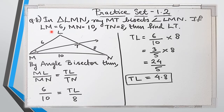Now let's move on to the next problem. In triangle LMN, ray MT bisects angle LMN. LM is 6, MN is 10, TN is 8, and we have to find LT. Again, we will be using the angle bisector theorem because an angle bisector is involved. That's the hint to recognize which theorem to use — just observe the information given and you can figure it out easily.